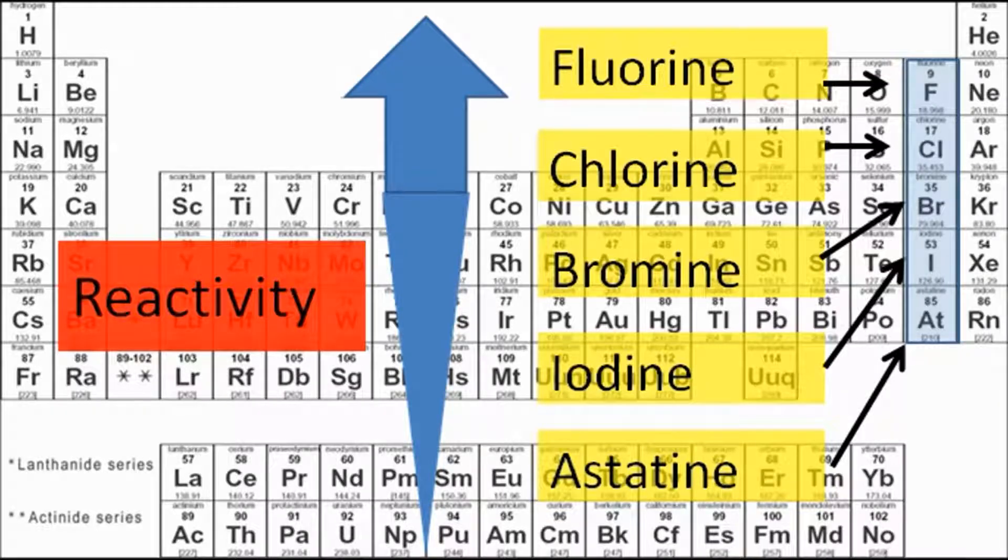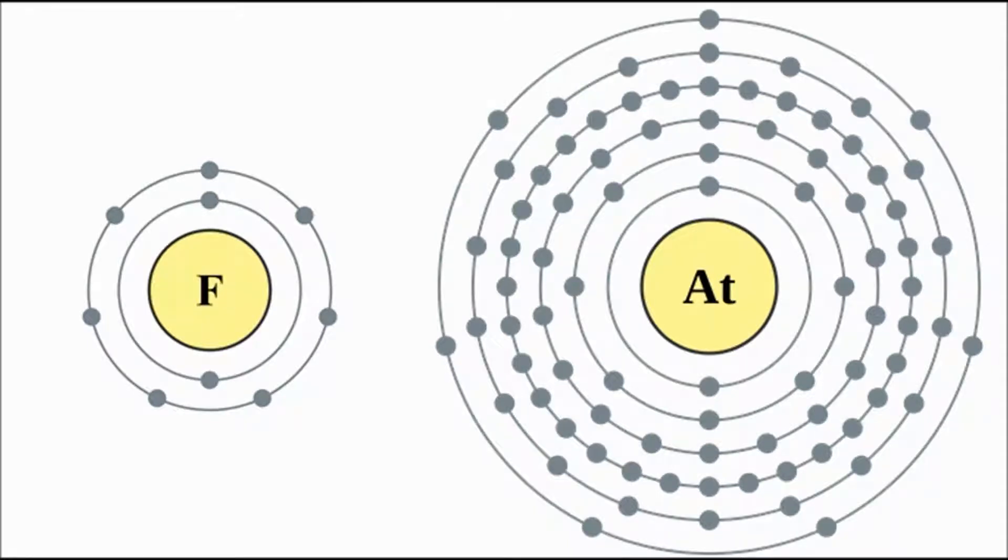The trend is that the group 7 halogens get more reactive as you go up the group. That's the opposite to the group 1 alkali metals which get more reactive as you go down the group. The most reactive group 7 element is fluorine and the least reactive is astatine. Group 7s have all got 7 electrons in their outer shell, so they only want one more electron to be stable. This makes all group 7s quite reactive and perfect partners for the group 1s who want to lose just one electron.